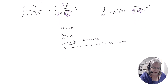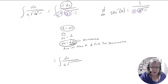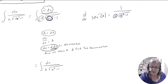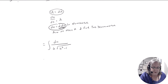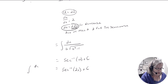Now that it matches the pattern, 2 dx is du, and 2x is u. So this is du over u times the square root of u squared minus 1. Integrating gives arcsec(u) plus C. Changing back — u was 2x — so the result is arcsec(2x) plus C. That's the integral of dx over x times the square root of 4x squared minus 1.